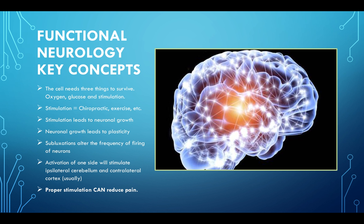The cell needs three things to survive: oxygen, glucose, and stimulation. The stimulation comes in the forms of chiropractic, exercise, physical therapy, modalities that you're using in your office. The stimulation that you're providing clinically leads to neuronal growth. The growth leads to plasticity. A subluxation or a change in the movement of the spine can alter the frequency of firing in the neurons and alter the ability to create plasticity.